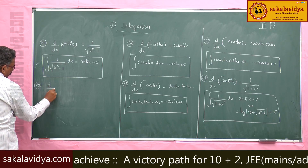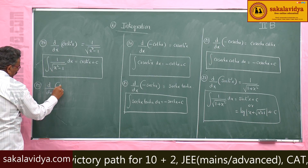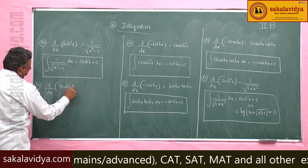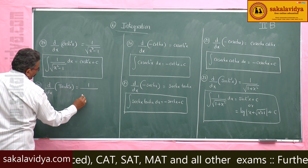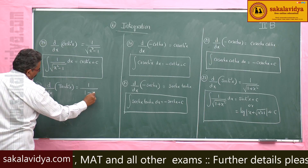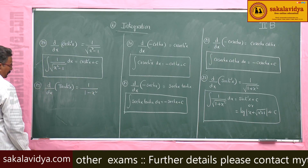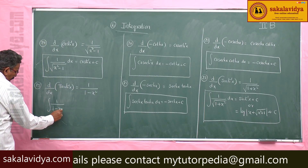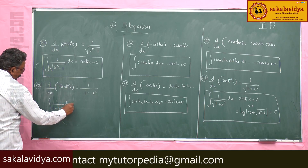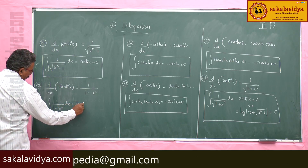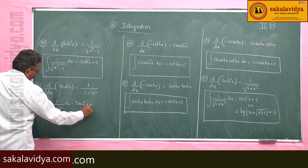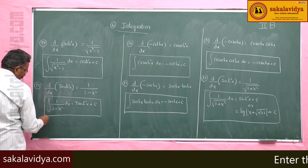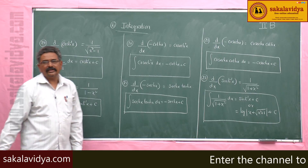Next, d by dx of tanh inverse x is 1 by 1 minus x squared. So, integral of 1 by 1 minus x squared dx is equal to tanh inverse x plus c. These are the standard forms of the integrals.